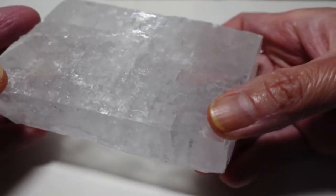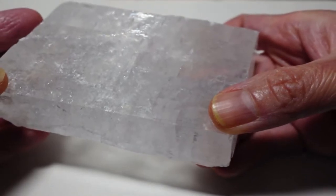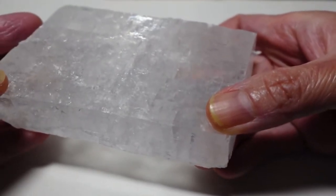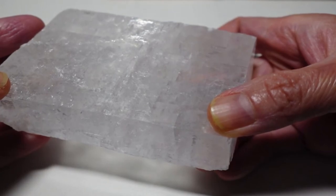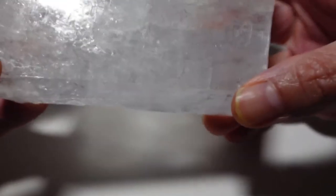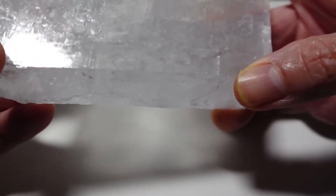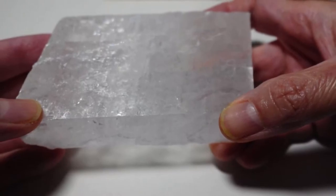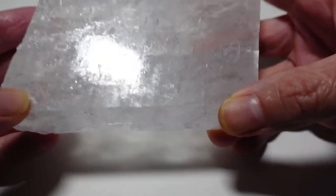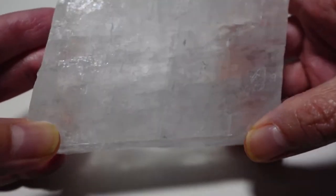By the way, sources say that Iceland Spar was used by the Vikings. Did you know that? Well, because of the light polarizing ability of the Iceland Spar, the Vikings were able to use it as a navigator, allowing them to be able to find the sun to reach their destination.